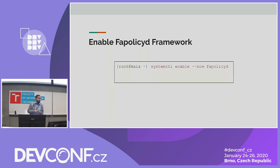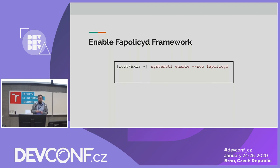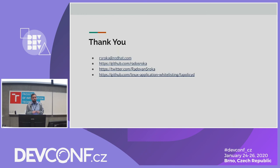So if we're okay with our configuration and everything works, we can enable the FAPOLICYD daemon with systemd and benefit from it.